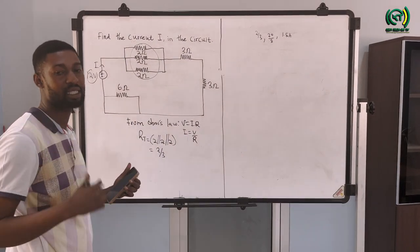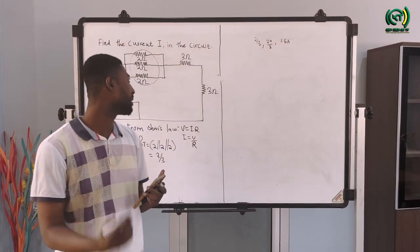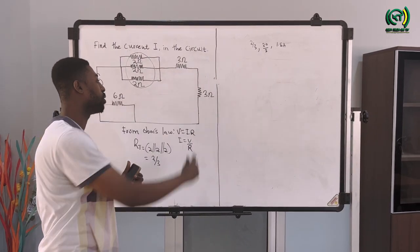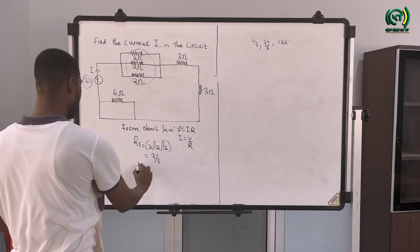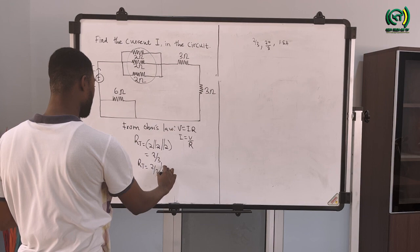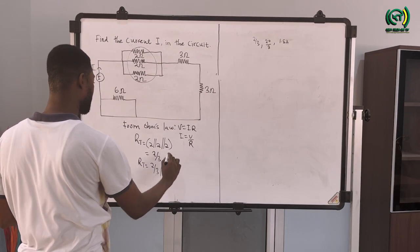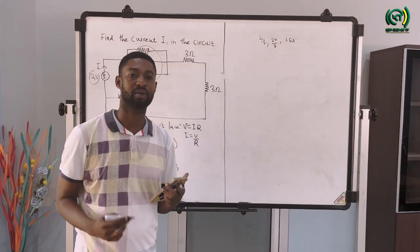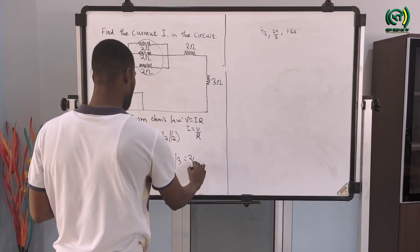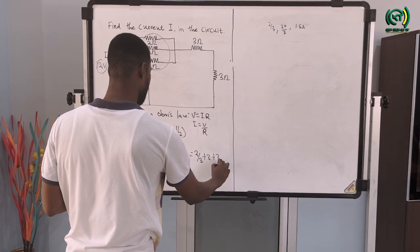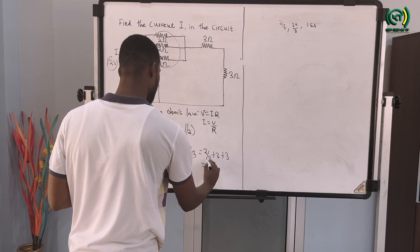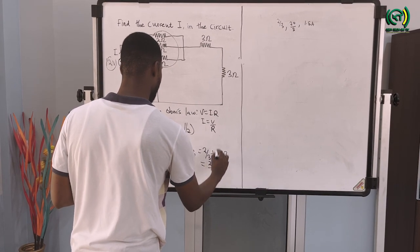That single resistor reduced to 2/3 will be in series with this 3-ohm resistor and also the other 3-ohm resistor. So our RT is equal to 2/3 in series with 3 in series with 3. Whenever resistors are connected in series we add them, so we have 2/3 plus 3 plus 3, which gives us 20/3.